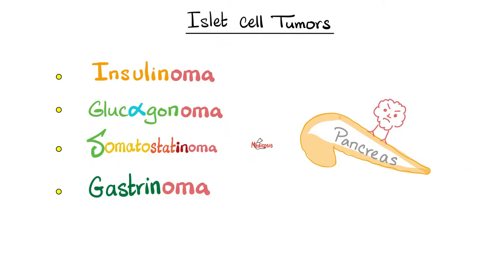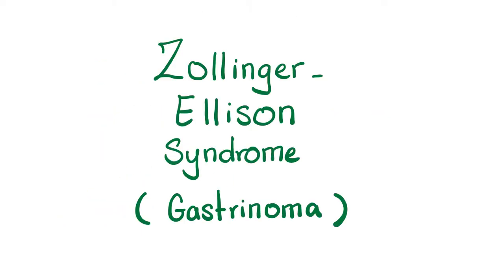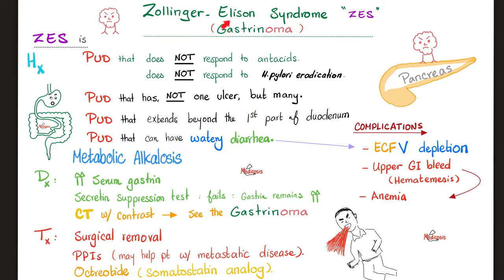Islet cell tumors arise in the pancreas and include insulinoma, which is the most common, glucagonoma, somatostatinoma, gastrinoma, and VIPoma, which we discussed in the last video. Today we're talking about gastrinoma — Zollinger-Ellison syndrome. How can I tell if a patient has gastrinoma or Zollinger-Ellison syndrome?